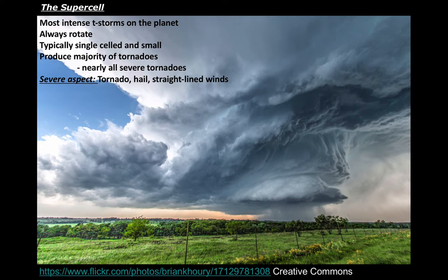The supercell — look at this breathtaking picture taken by Brian Curry. This is what one looks like. We're seeing almost all of it. It's small, but pound for pound the most intense thunderstorm on the planet. The key distinguishing feature of a supercell? They rotate. They visibly spin. You can see it.